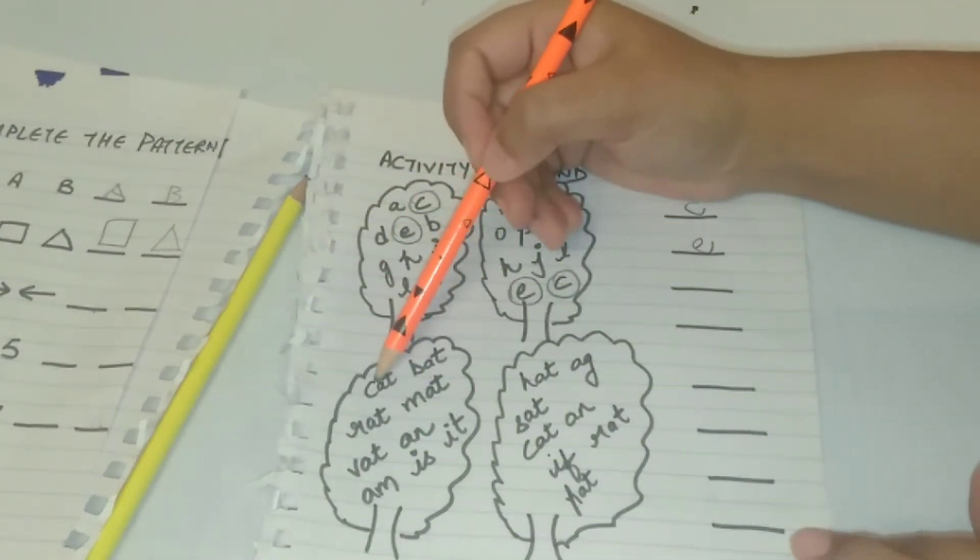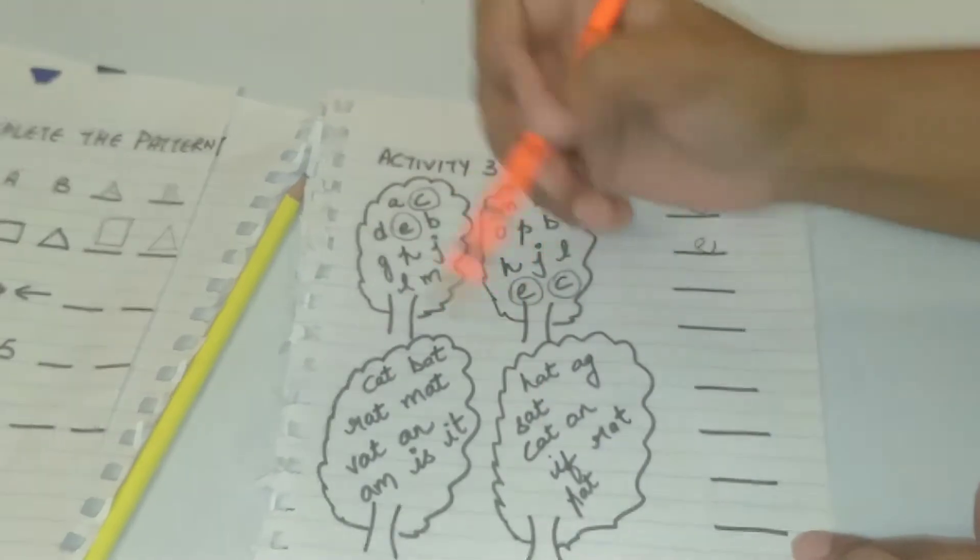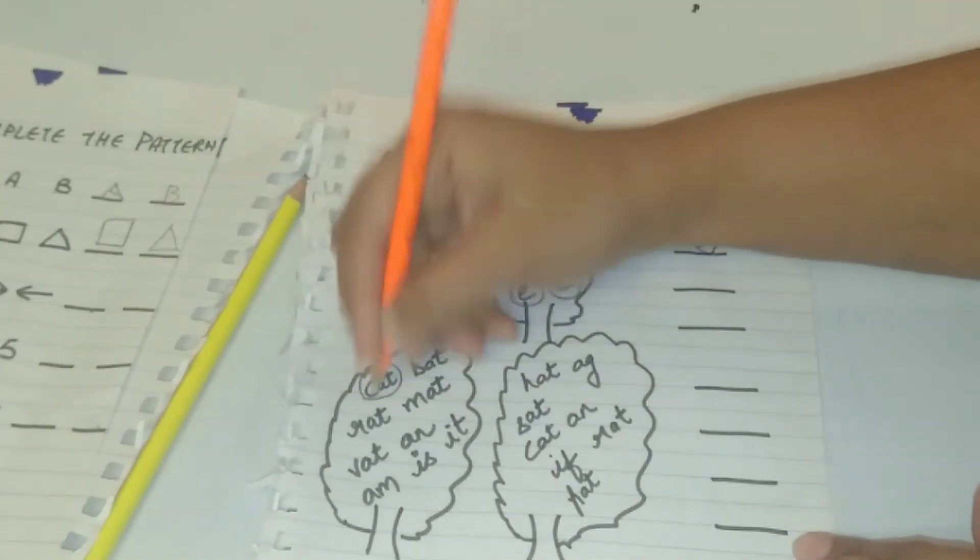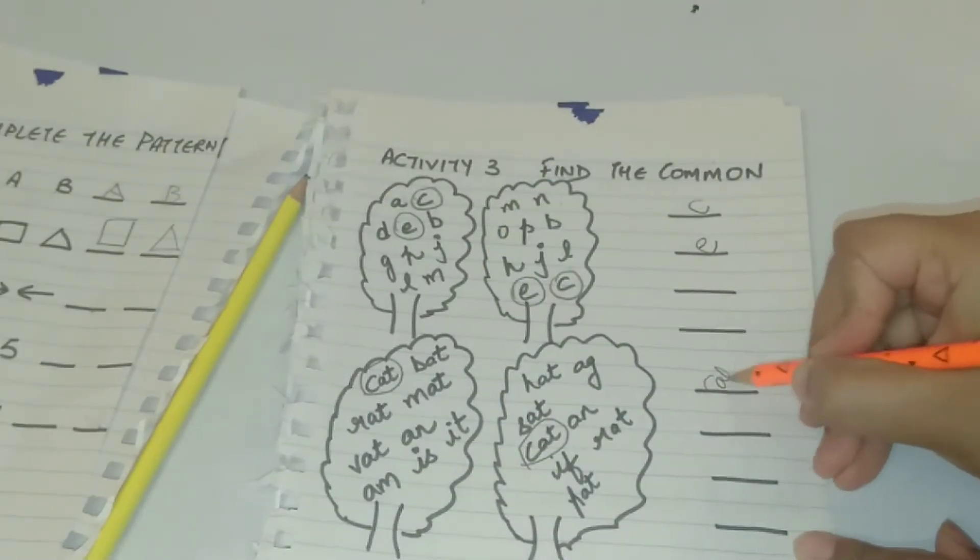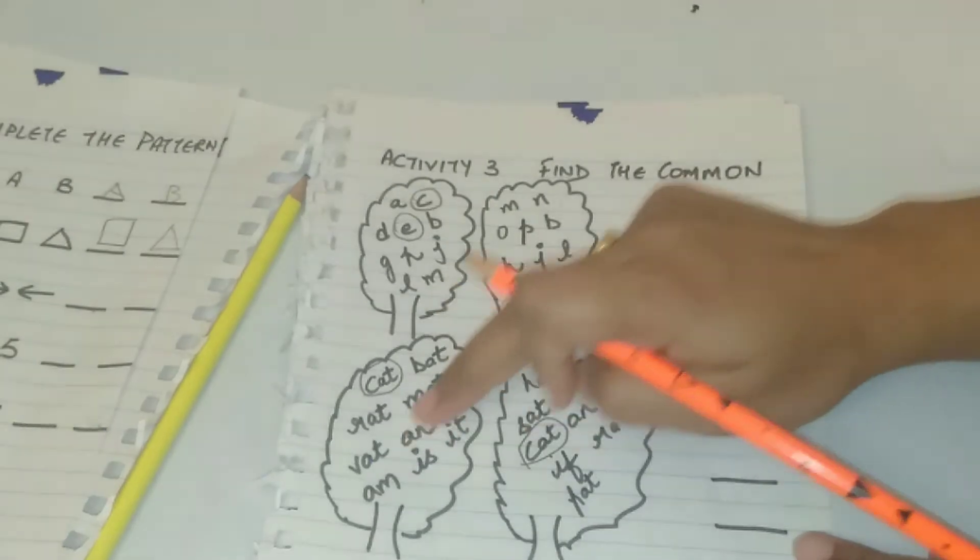In the second tree, instead of alphabets, I have written some small three letter words. So they have to see the same words and then write the answer. It's quite good for brainstorming.